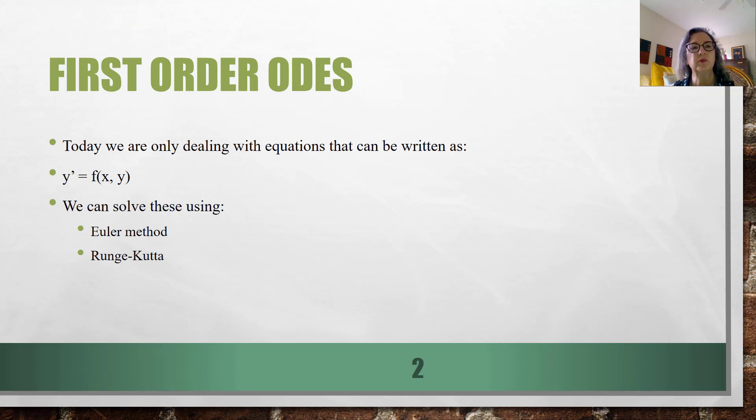So we're only dealing with things where the first derivative can be written as a function of the independent variable x and the dependent variable y. And we have two techniques for this. One is the Euler method and the other is the Runge-Kutta technique.